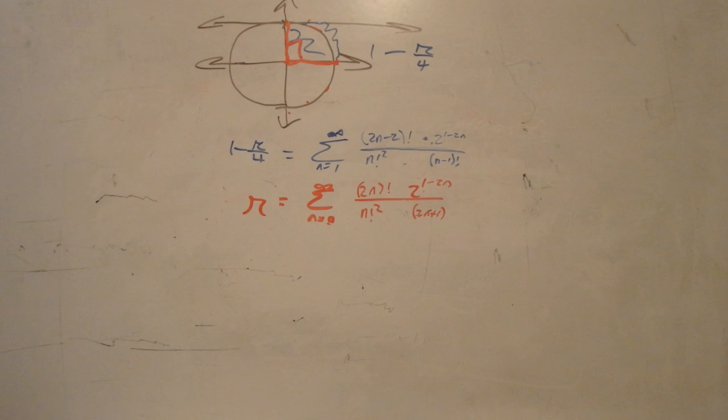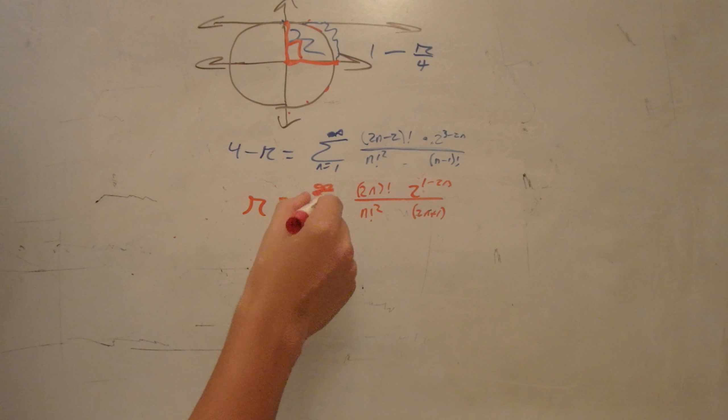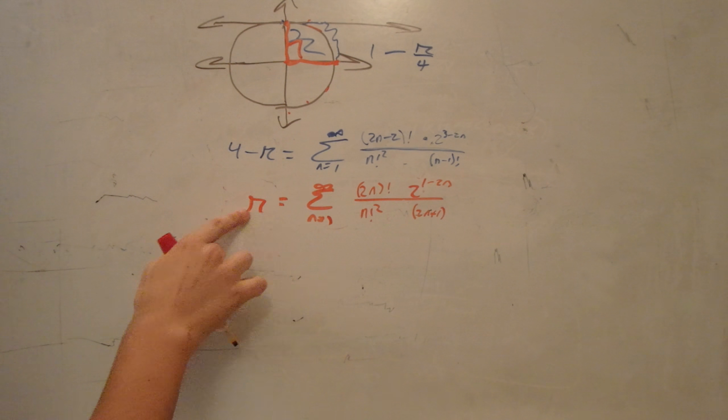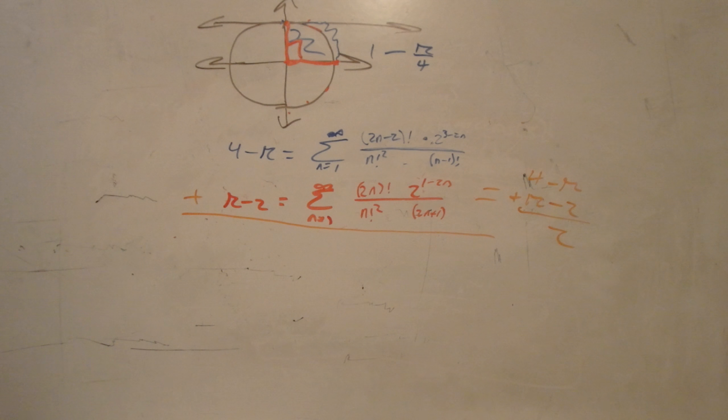We can multiply this by 4, and that equals 4 minus pi. This counter starts at 1, and this counter starts at 0, so we can't add these together. Because of that, we need to take out the n equals 0 and start the counter at 1. Well, notice that n equals 0, this is equal to 2, so we can move 2 over to this side, which equals pi minus 2. So when we add those up together, it's going to equal 2.